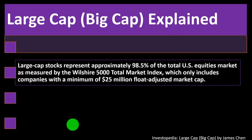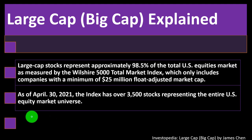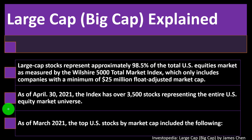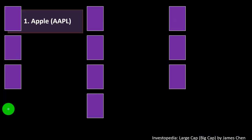Large cap stocks represent approximately 98.5% of the total U.S. equities market, as measured by the Wilshire 5000 Total Market Index, which only includes companies with a minimum of $25 million float-adjusted market cap. As of April 30, 2021, the index has over 3,500 stocks representing the entire U.S. equity market universe. As of March 2021, the top U.S. stocks by market cap included the following.